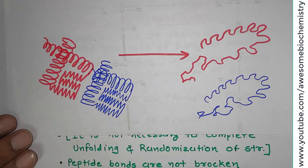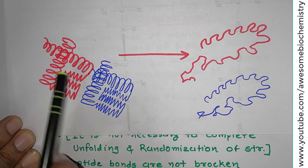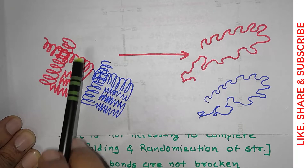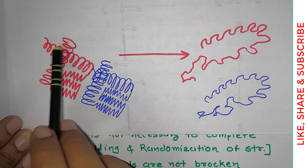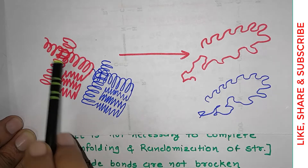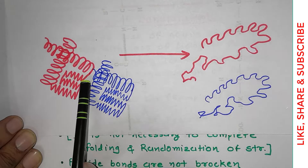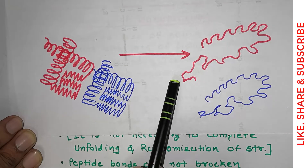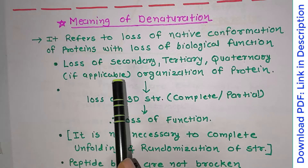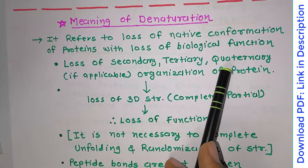In this second example, you can see this is the quaternary structure, because there are two polypeptide chains — one in red and one in blue. Two tertiary structures are combining to make one quaternary structure. When this undergoes denaturation, both chains will be separated and each tertiary structure is lost — there is a loss of quaternary structure, loss of tertiary structure, and loss of secondary structure. If a protein has a quaternary structure, then it can also get lost; otherwise, if a protein has only tertiary structure, quaternary structure loss is not applicable.